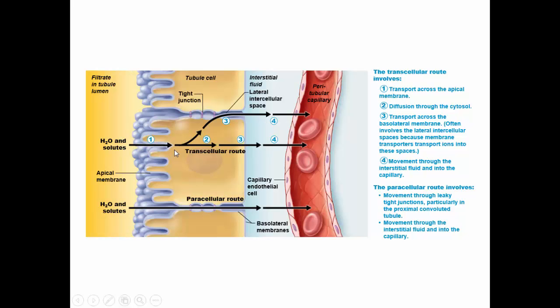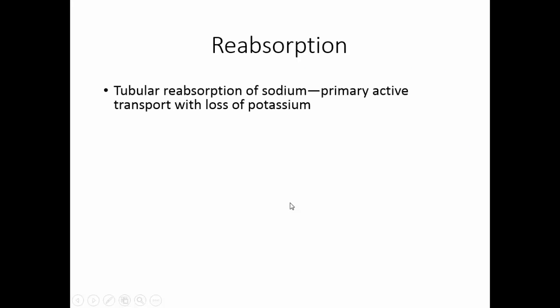Water and solutes may go straight through the cell — that transcellular route — to get back into the blood. They are taken in by active transport, diffuse across the cell, and then leave the cell to get into the blood. Others may go in between the cells. This is the paracellular route. Tubular reabsorption of sodium is a primary active transport process.